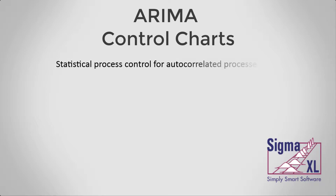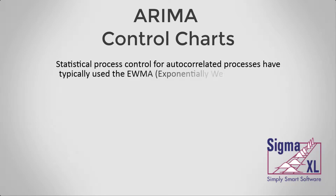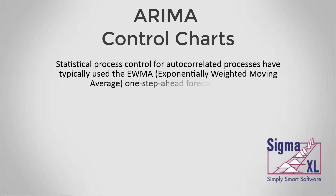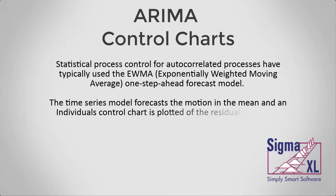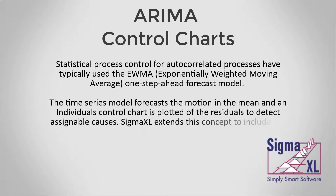Statistical process control for autocorrelated processes has typically used the EWMA, or Exponentially Weighted Moving Average, One Step Ahead Forecast model. The time series model forecasts the motion in the mean, and an individuals control chart is plotted of the residuals to detect assignable causes.